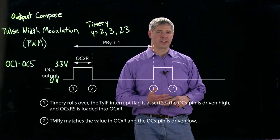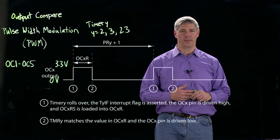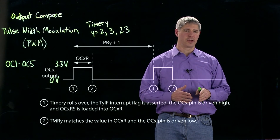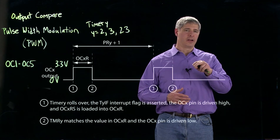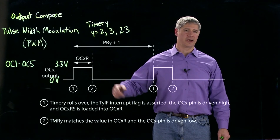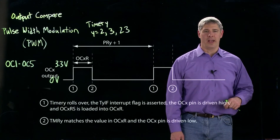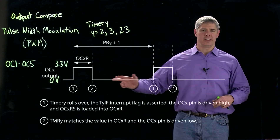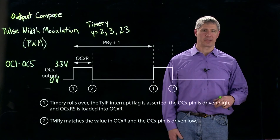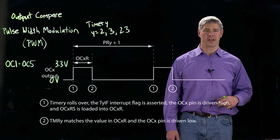That's how the output compare module works. It uses timer 2, timer 3, or the 32-bit timer 2/3. Whenever that timer rolls over, it sets the digital output high. When the value reaches OCXR, it sets the output low, continuing to make a pulse train. These pulses are typically fed to a motor amplifier to drive a motor.